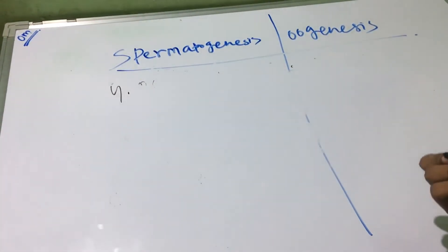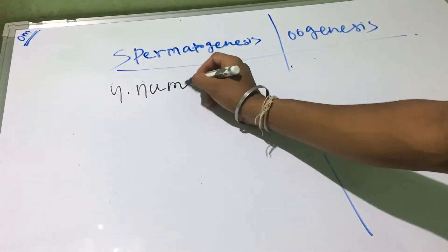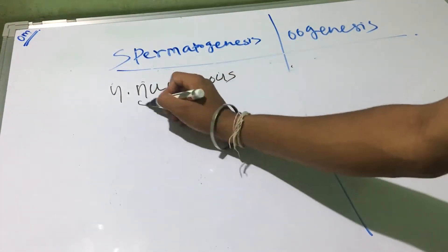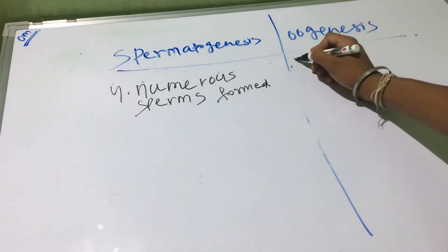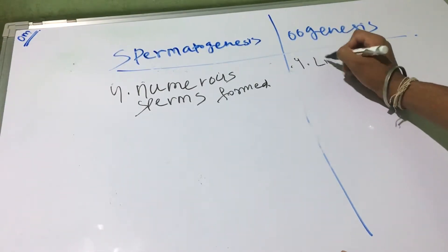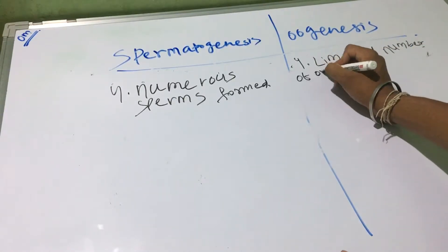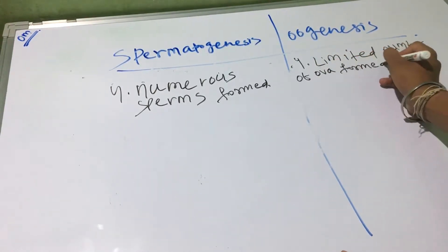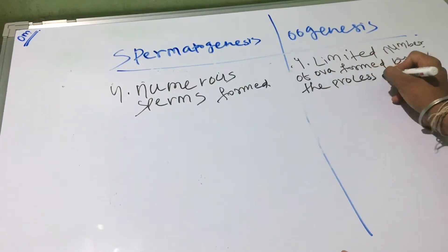The fourth point: numerous sperms are formed by the process of spermatogenesis. In case of oogenesis, there are a limited number of ova formed by the process of oogenesis.